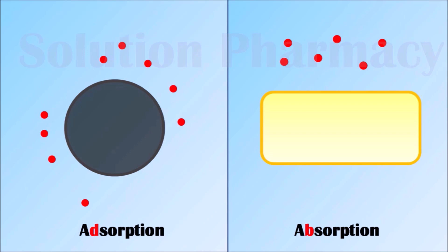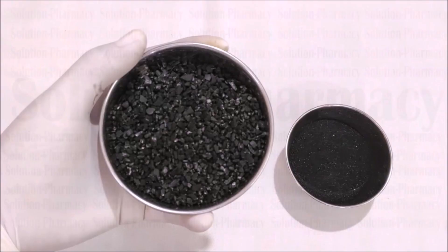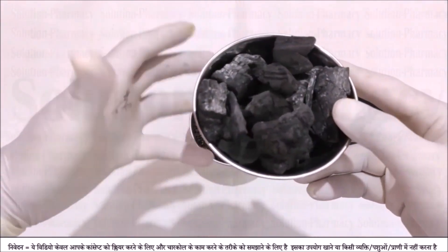Through animation we are demonstrating the adsorption process more clearly. The black particle represents activated charcoal and the red particle represents a dissolved pigment. You can see how the activated charcoal adsorbs the red particles on its surface — the red particles stick to the surface but do not enter inside the charcoal. Here, activated charcoal is the adsorbent and the red particles are the adsorbate.